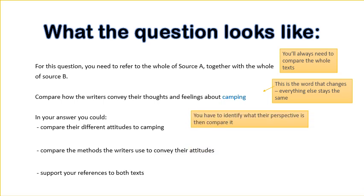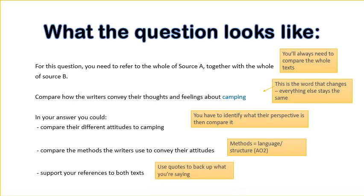The question will always give you some ideas for what to include. It says: in your answer you could compare the different attitudes to camping, meaning you have to identify what the writer's perspective is in each source and then compare them. It also says compare the methods the writers use to convey their attitudes — this refers to AO2, your ability to analyse language or structure and explain the effects. Finally, support your ideas with references to both texts, meaning use quotes to back up what you're saying.